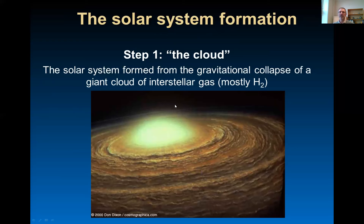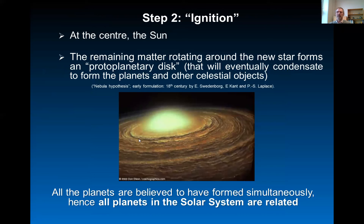So this is basically what you could see. And then this giant cloud starts to rotate, and at the center the pressure is very strong, the temperature is really high, and at some point it collapses and we start a new star. So at the center we have the sun, and all the remaining matter forms what we call a proto-planetary disk, and all this matter will eventually condense to form the planets and the other objects in the solar system.